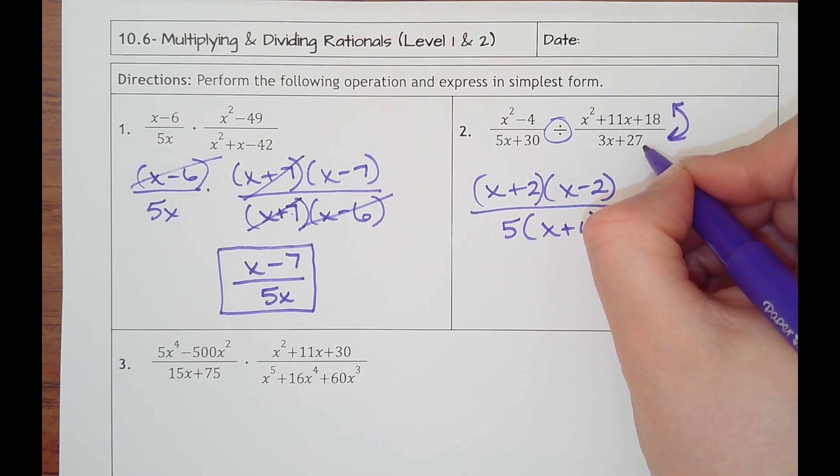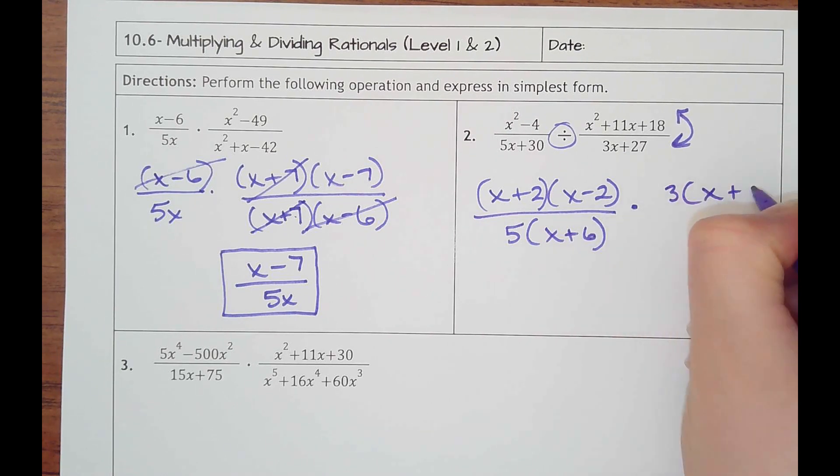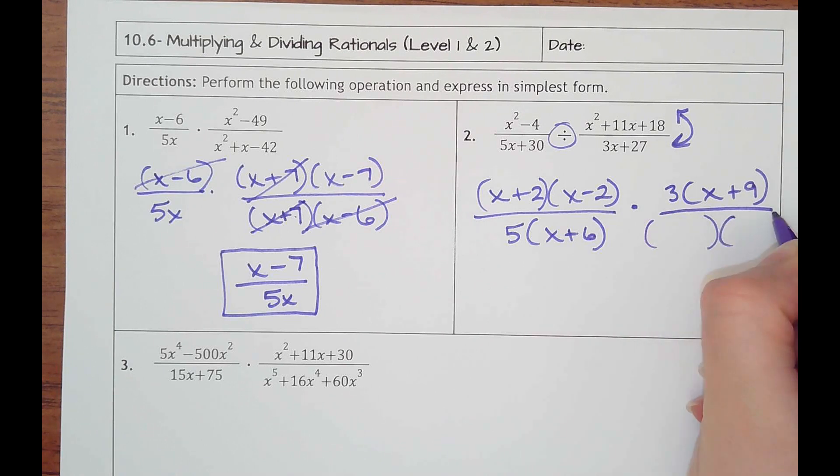So this bottom will really become my top part. Take out a 3, that'd be times an x plus 9. On the bottom is a basic trinomial. Multiply to make 18.